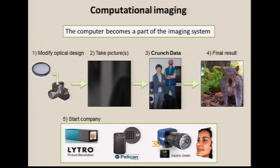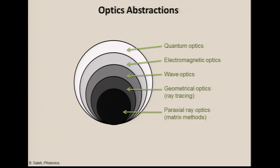My group is working in a slightly different regime, because computational photography has become explosively popular and is redefining how photography is done. But my work is in a different regime — we're one abstraction out in this world of optics where we can't treat things like ray optics anymore. Light is a wave, not a particle at this scale, and this happens when things are small. When things are small, wave optics matters: you need to care about phase and diffraction. We almost exclusively do microscopy, bringing computational imaging ideas to scientific microscopy applications.